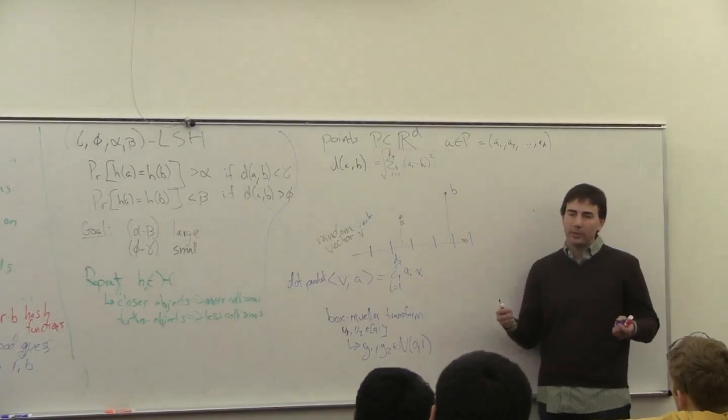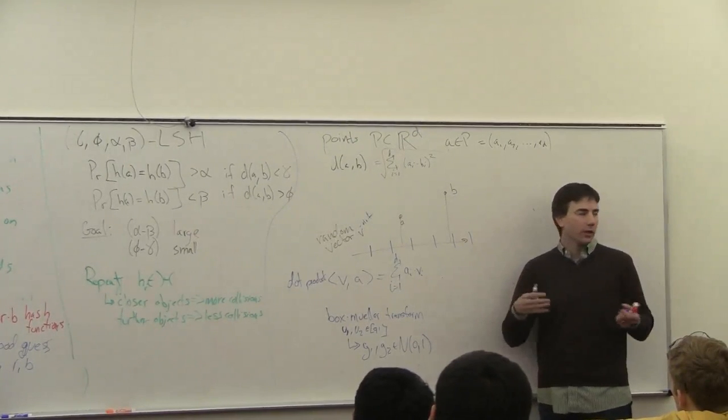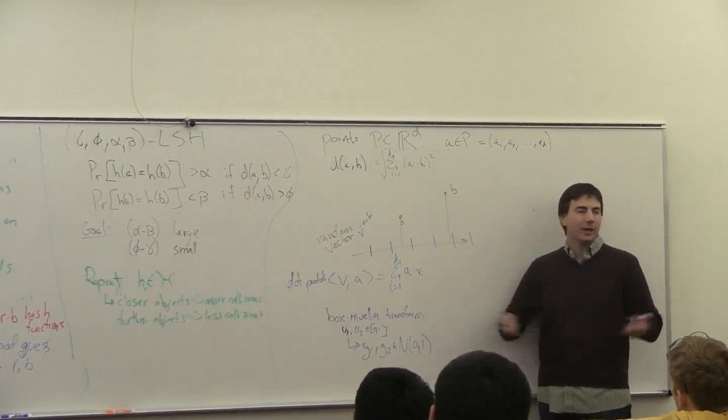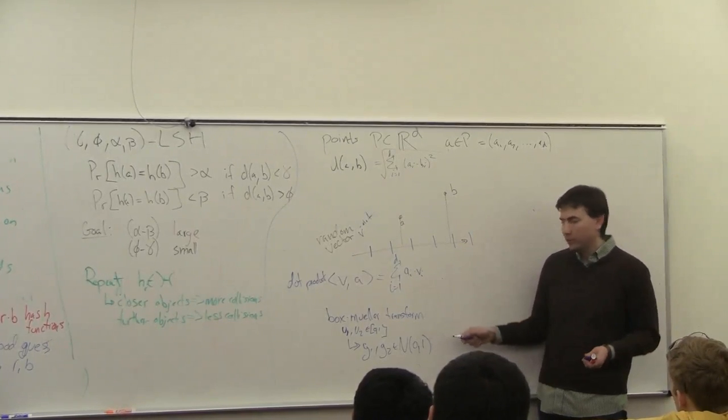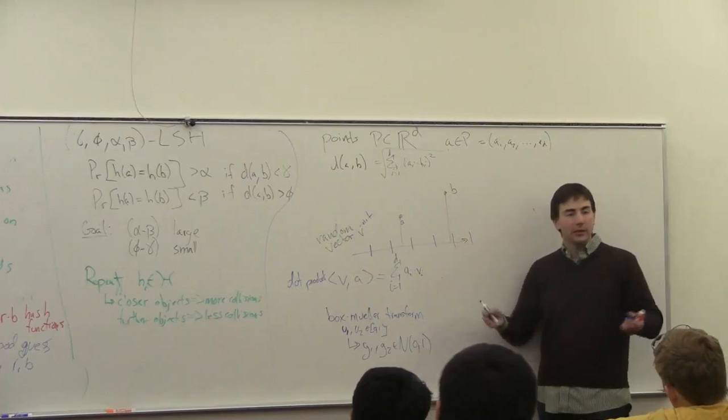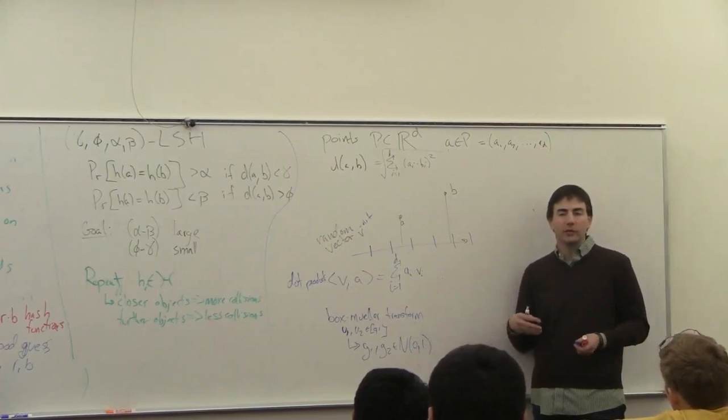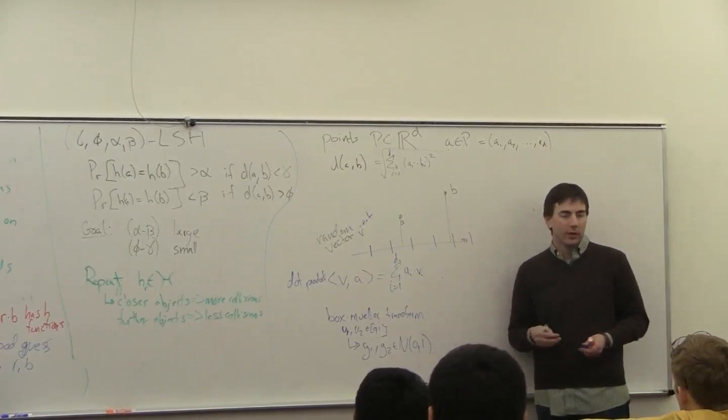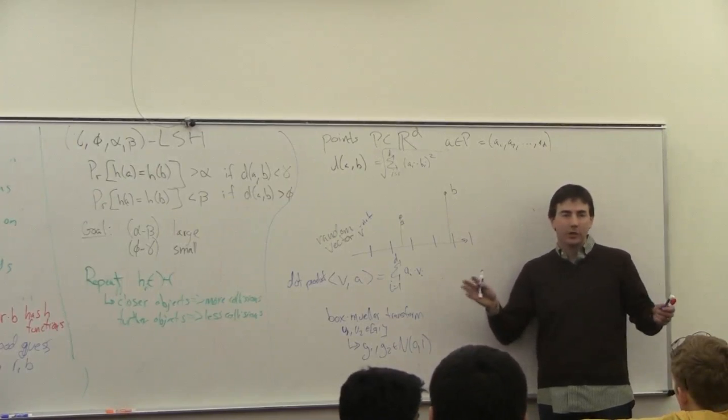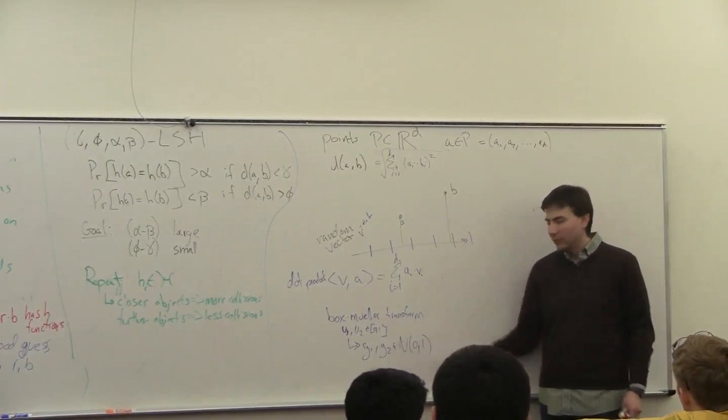But the Gaussian function has a property that is symmetric in all the dimensions. And to generate a high-dimensional Gaussian, what you do is you can take... You generate d low-dimensional Gaussians, and you have each one of those as one coordinate. It's a pretty magical property of the Gaussian.